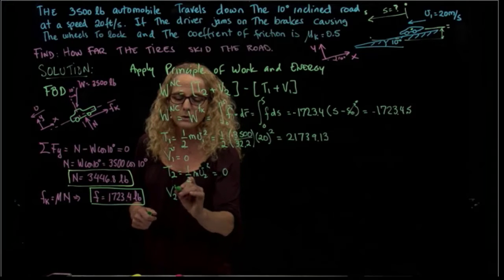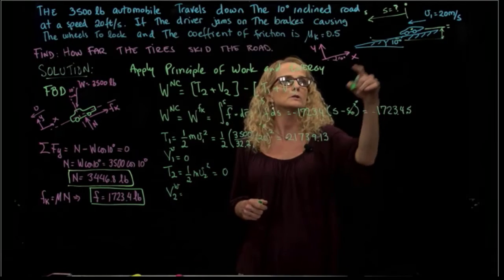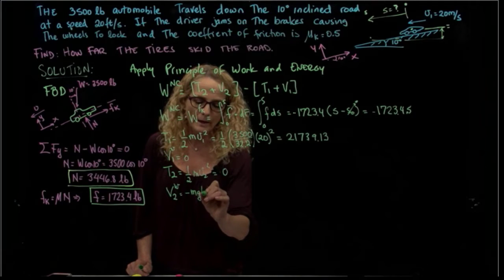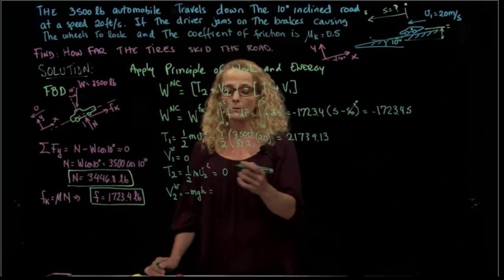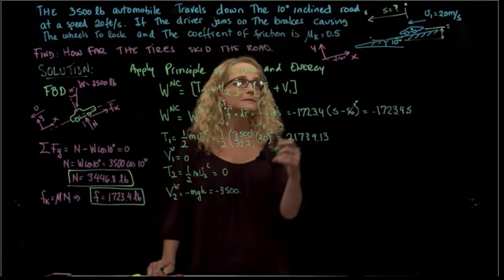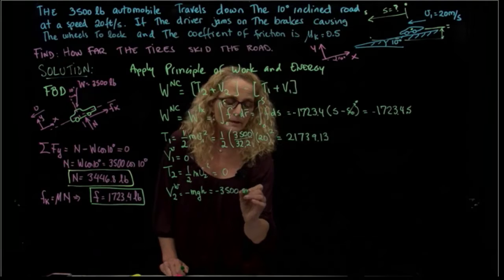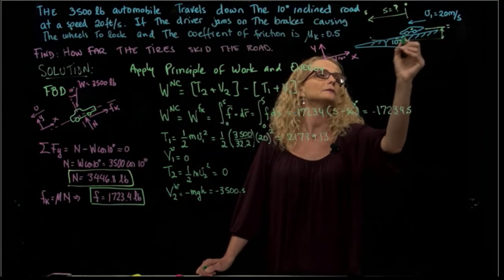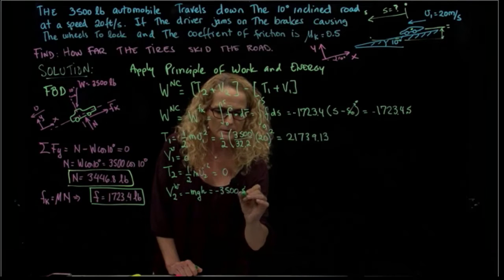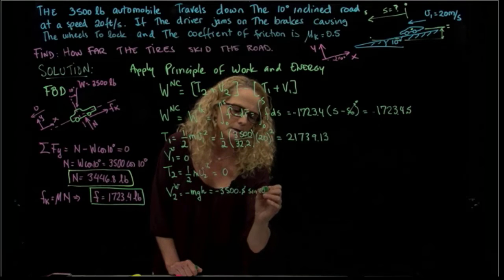And then finally, V2 for the weight. We already said that we lost potential energy, and that will be negative the weight times the height, which is S. But it's not in that direction, so we have to multiply by sine of 10. S sine of 10 degrees.